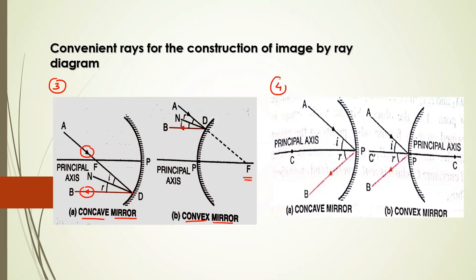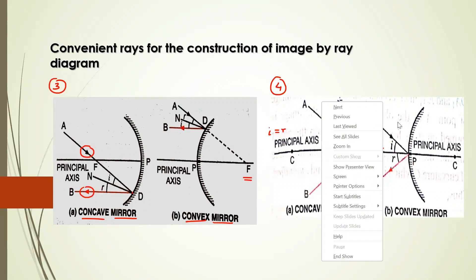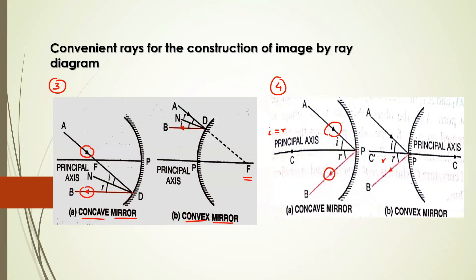Then we go to the fourth convenient ray. If an incident ray is coming obliquely at the pole of the concave mirror, it will follow the laws of reflection. So in case of a concave mirror, a ray incident obliquely at the pole will reflect back following the law of reflection — that means the angle of incidence i equals the angle of reflection r. The same goes for the convex mirror as well.